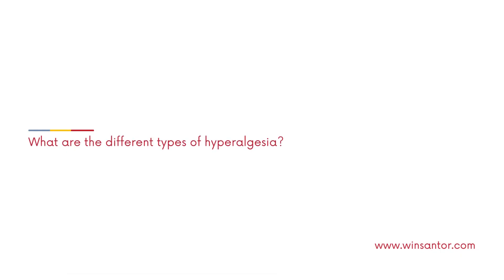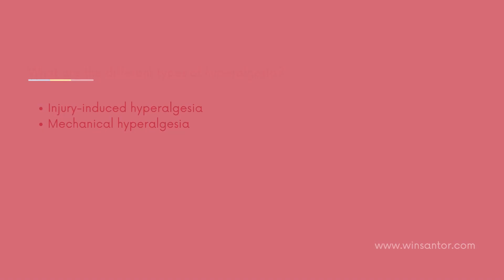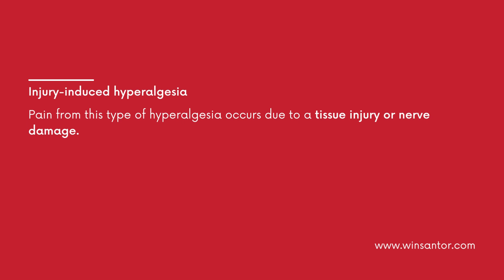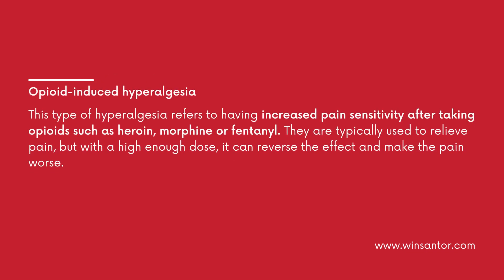What are the different types of hyperalgesia? Injury-induced hyperalgesia occurs due to a tissue injury or nerve damage. Opioid-induced hyperalgesia refers to having increased pain sensitivity after taking opioids such as heroin, morphine, or fentanyl. These are typically used to relieve pain, but with a high enough dose, it can reverse the effect and make the pain worse.